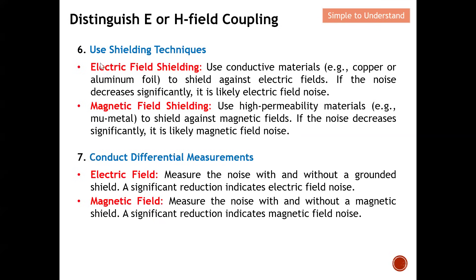Different shielding techniques can also help determine the noise type. For electric field shielding, use conductive materials such as copper or aluminium — these are effective against electric fields. If the noise decreases significantly, it is likely electric field noise. For magnetic field shielding, we need high-permeability materials such as mu-metal. If noise decreases significantly with mu-metal shielding, it is most likely magnetic field noise.